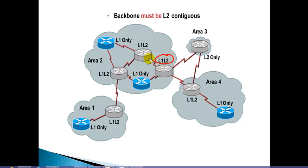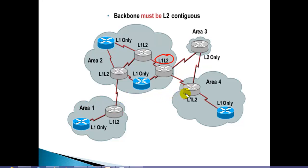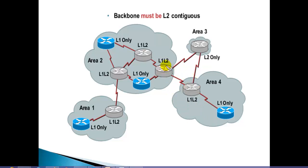So in this scenario, this router must be configured as Level 1/Level 2. Similarly, another border router that exchanges routes with internal routers as well as external routers must also be Level 1/Level 2. These three specific routers that communicate with both internal and external routers must all be configured as Level 1/Level 2.